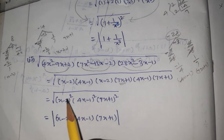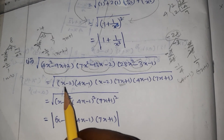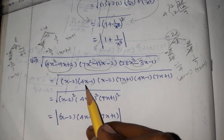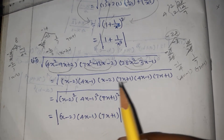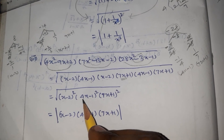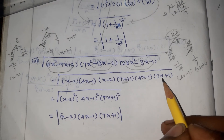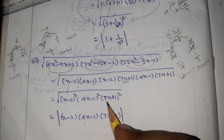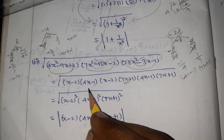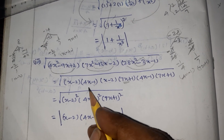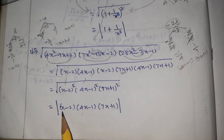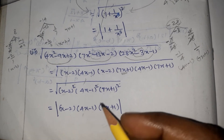Taking the square root of the full expression: since each quadratic is a perfect square factor, we write 4x minus 1 whole square, 7x plus 1 whole square, and x minus 2 whole square. So the square root cancels to give x minus 2, 4x minus 1, and 7x plus 1.